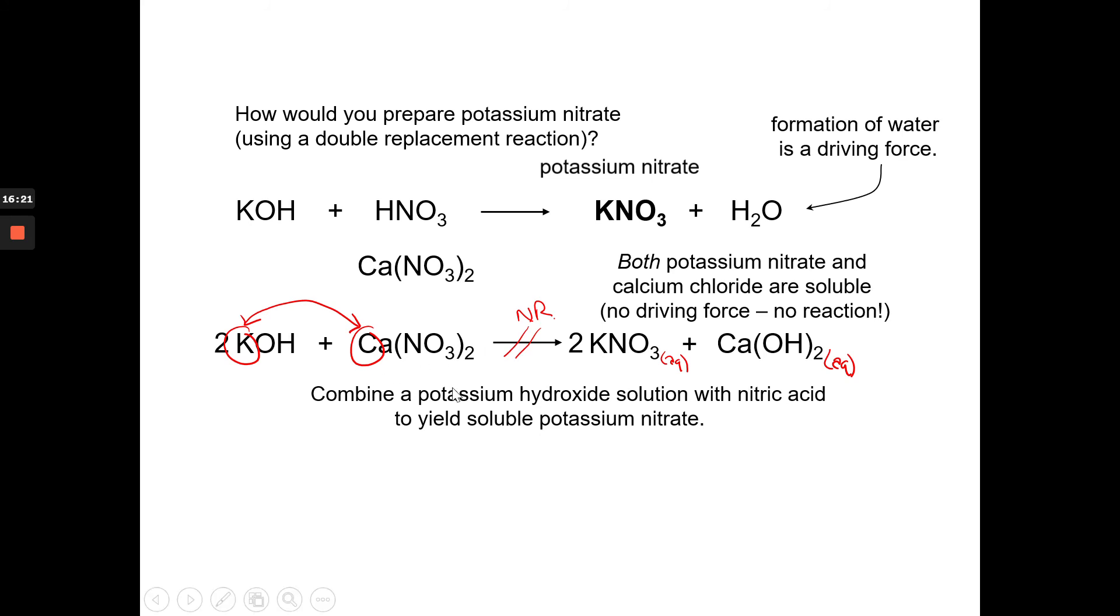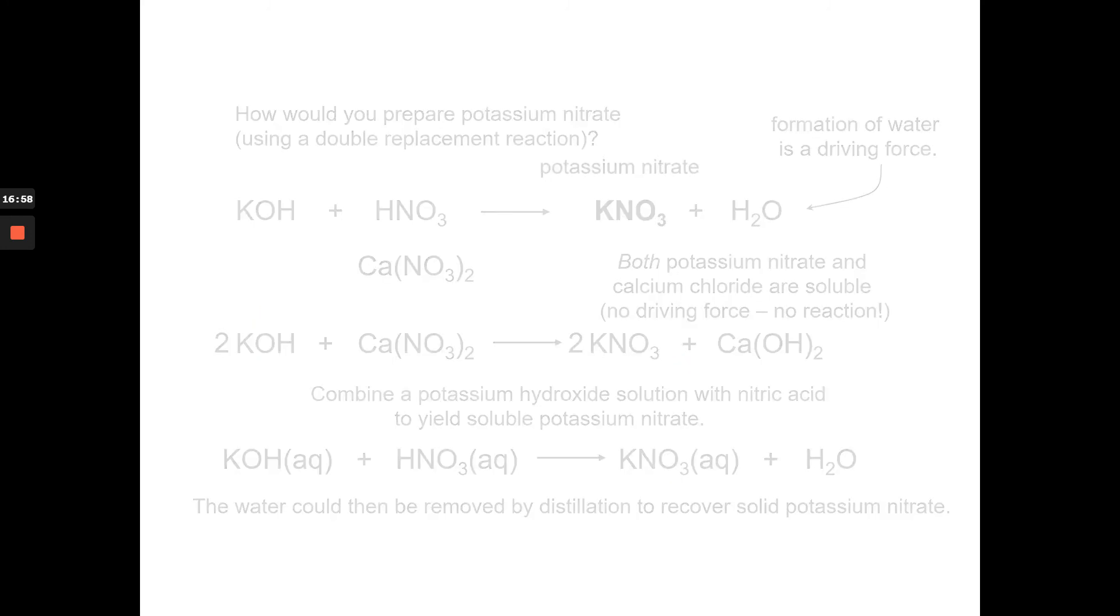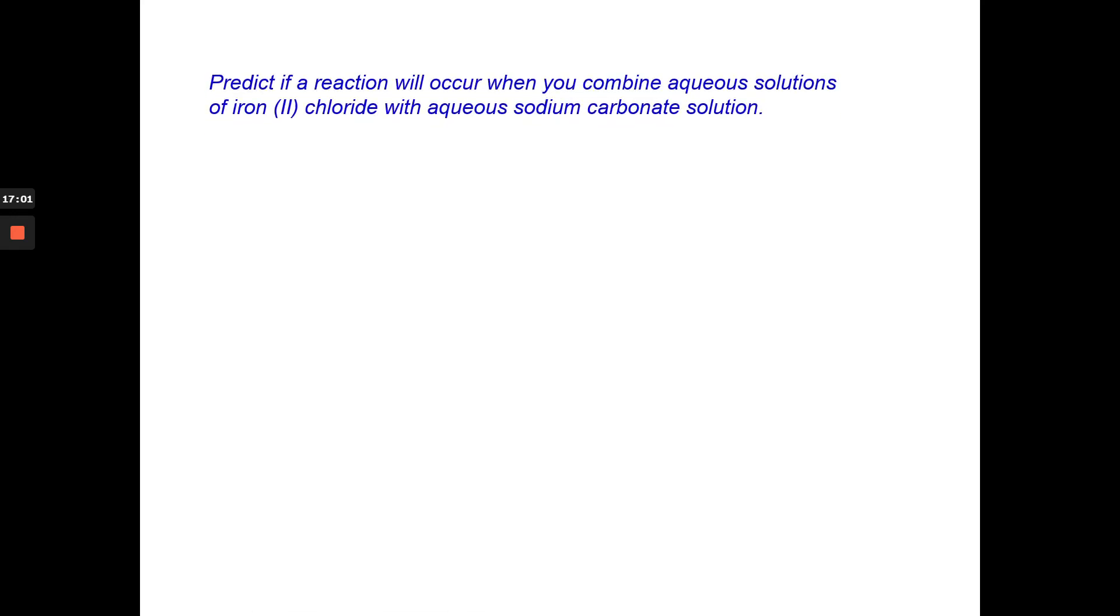We're going to talk more about predicting chemical reactions. That's a major topic that we want to make sure we can understand. We'll probably spend at least a day, maybe two days on that topic. We could balance it, but we're just kind of wasting our time if we did, because it doesn't work. If you combine potassium hydroxide solution with nitric acid, it will give you soluble potassium nitrate, but also water, which is the driving force. So here's KOH plus nitric acid, goes to KNO3 plus water. Water is a driving force, and therefore, the reaction will occur. The water can be removed by distillation, and what you'd be left with is solid potassium nitrate. That's how you would pull this out of solution.